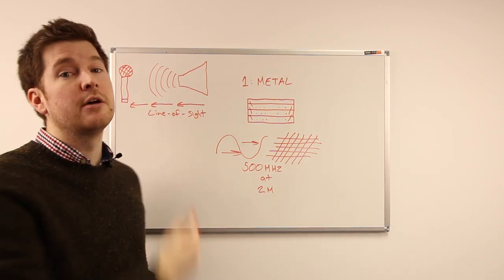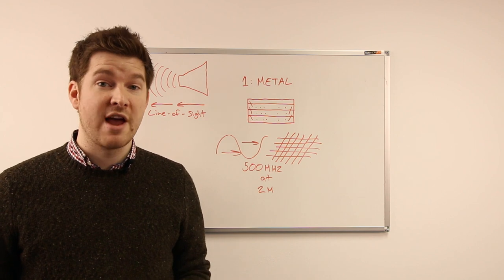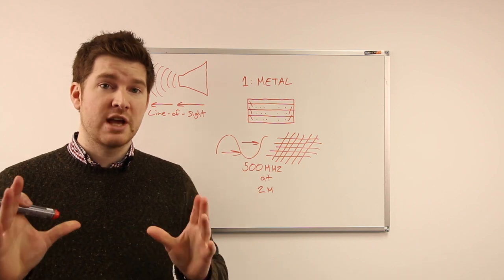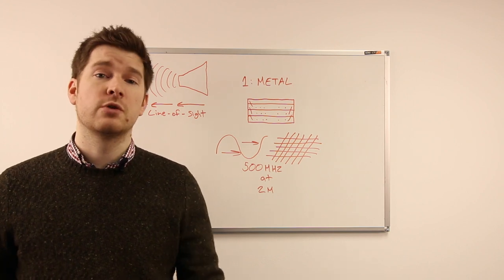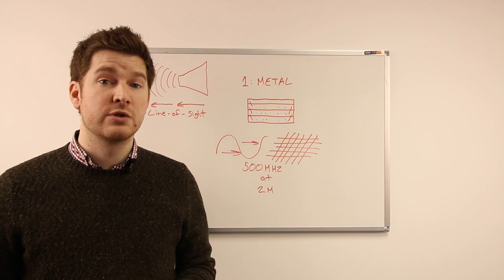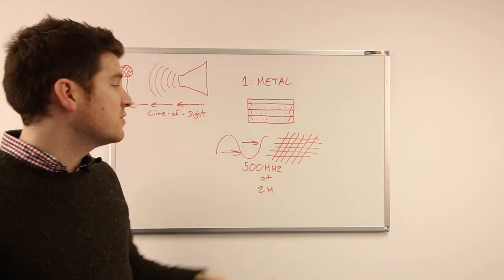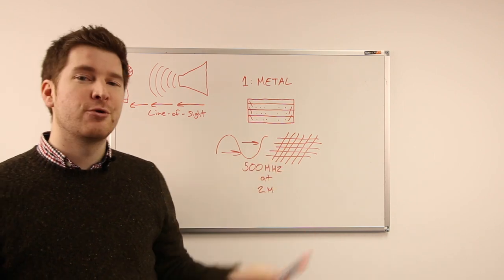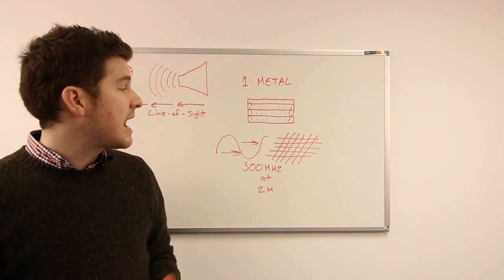The second most common example of where metal causes problems with RF is large metal objects in general. Quite often at stadiums or large concert venues there can be some large metal structures that can cause us problems with our transmission or receiving. If we take my slightly crudely drawn metal fence here as an example, this metal fence has holes in it.